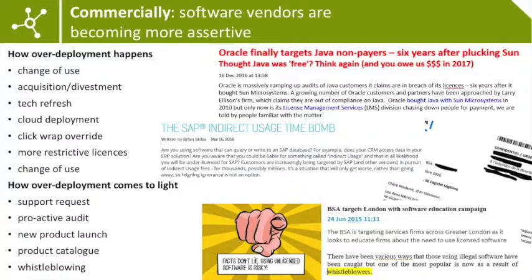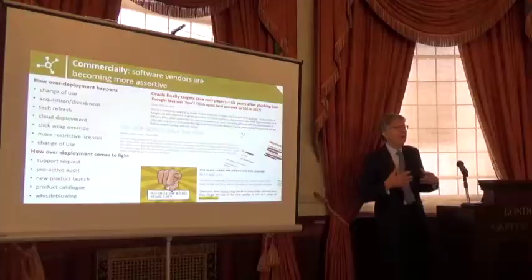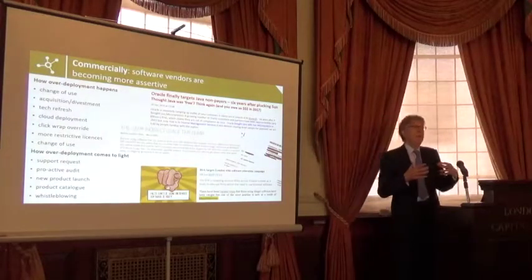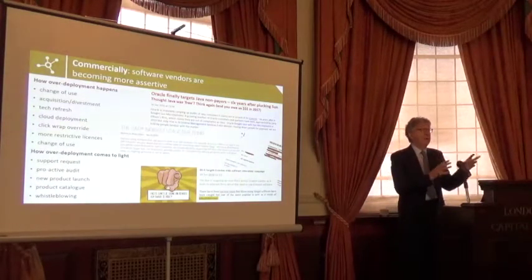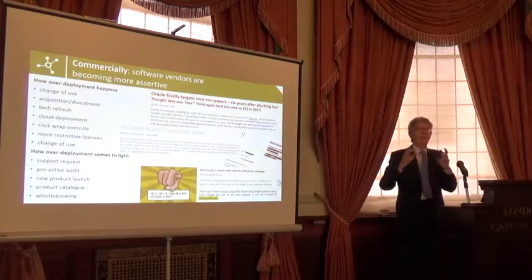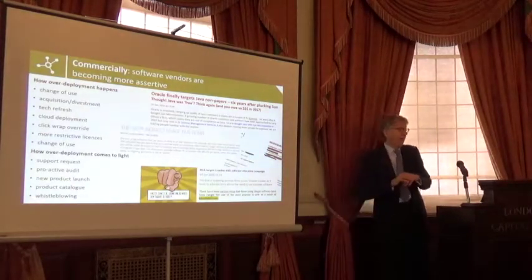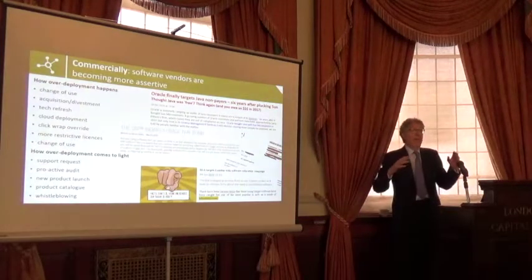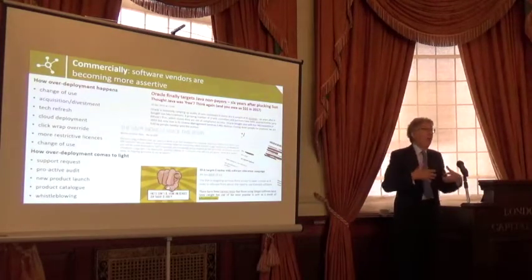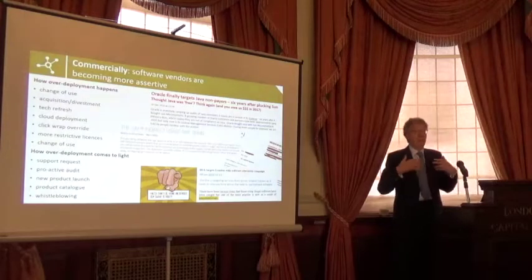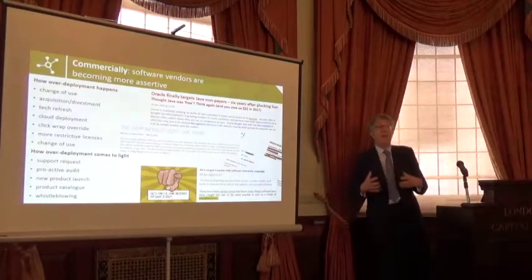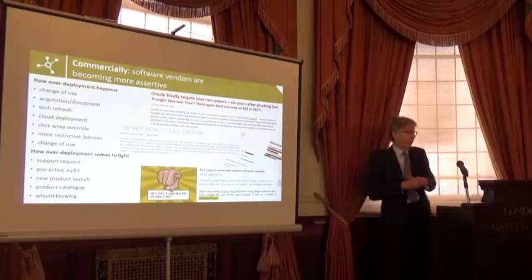Commercially, we're seeing software vendors becoming much more assertive. Part of it is that growth is harder to come by. People are moving from the perpetual license model to the subscription service-based model, and going harder after under-licensing or non-licensing is a good way of making the revenue growth that vendors want for their shareholders.